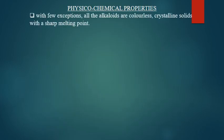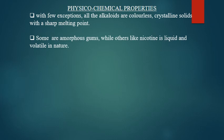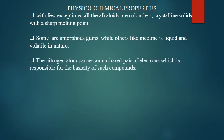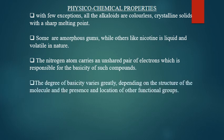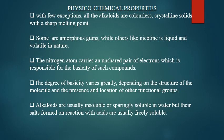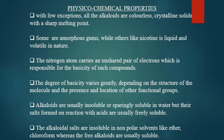Physicochemical Properties: With few exceptions, all alkaloids are colorless crystalline solids with a sharp melting point. Some are amorphous gums, while others like nicotine are liquid and volatile. The nitrogen atom carries an unshared pair of electrons responsible for the basicity of such compounds. The degree of basicity varies greatly depending on the molecular structure and location of functional groups. Alkaloids are usually insoluble in water, but their salts formed on reaction with acids are usually freely soluble. The alkaloid salts are insoluble in non-polar solvents like ether and chloroform, whereas the free alkaloids are usually soluble in them.